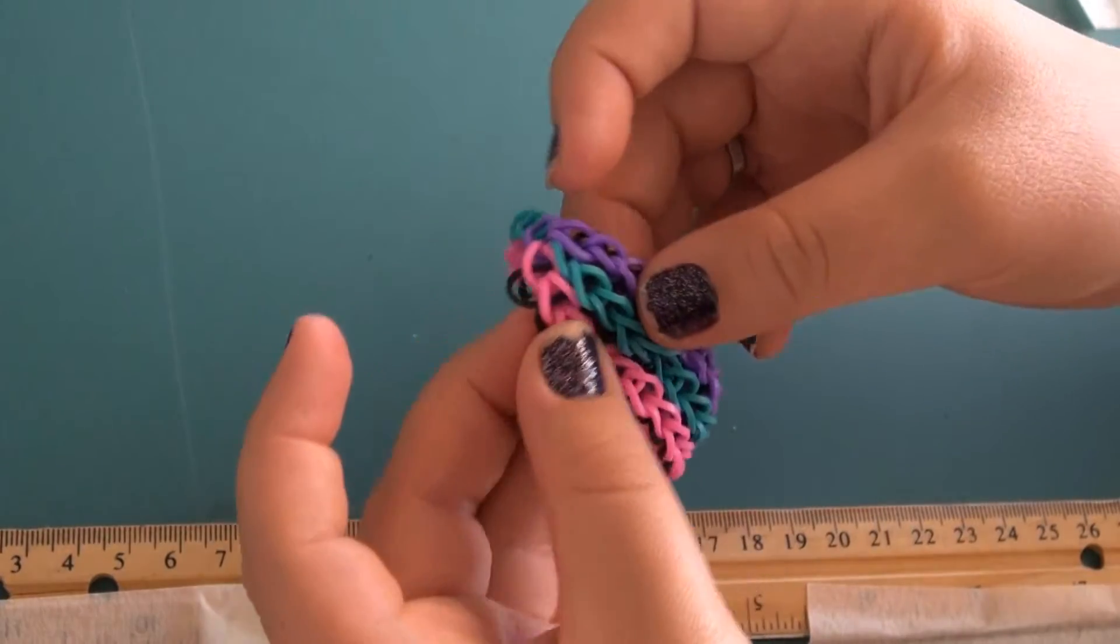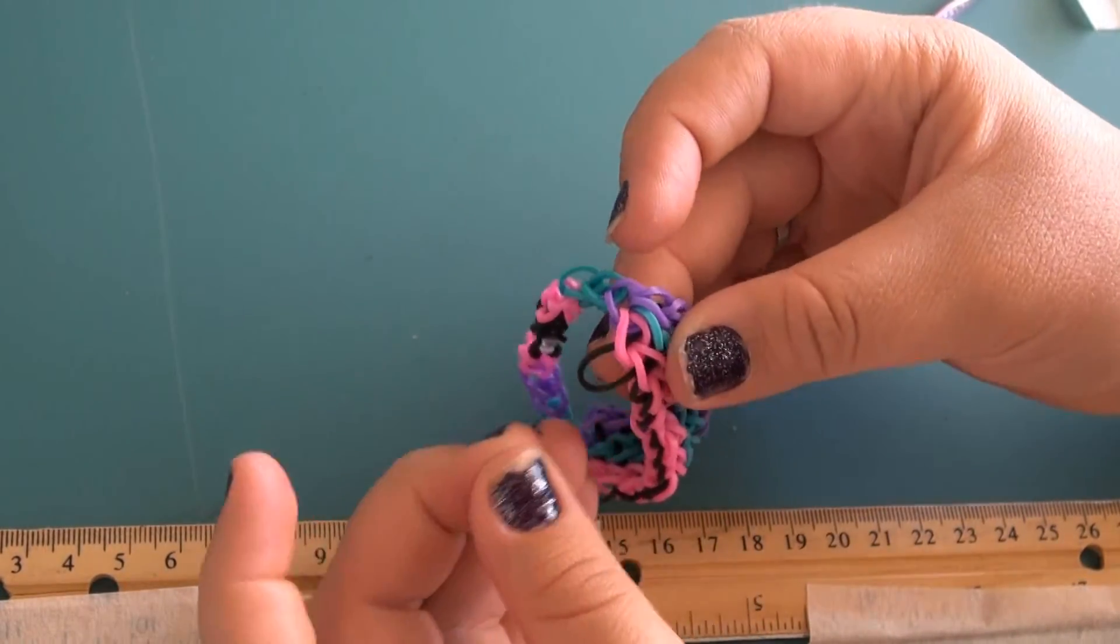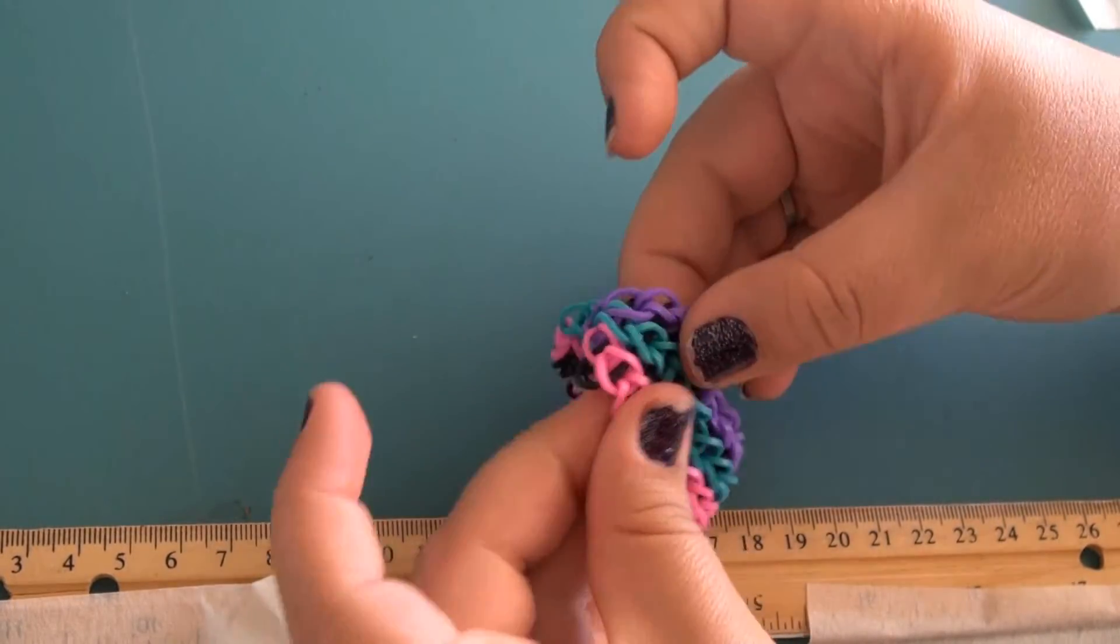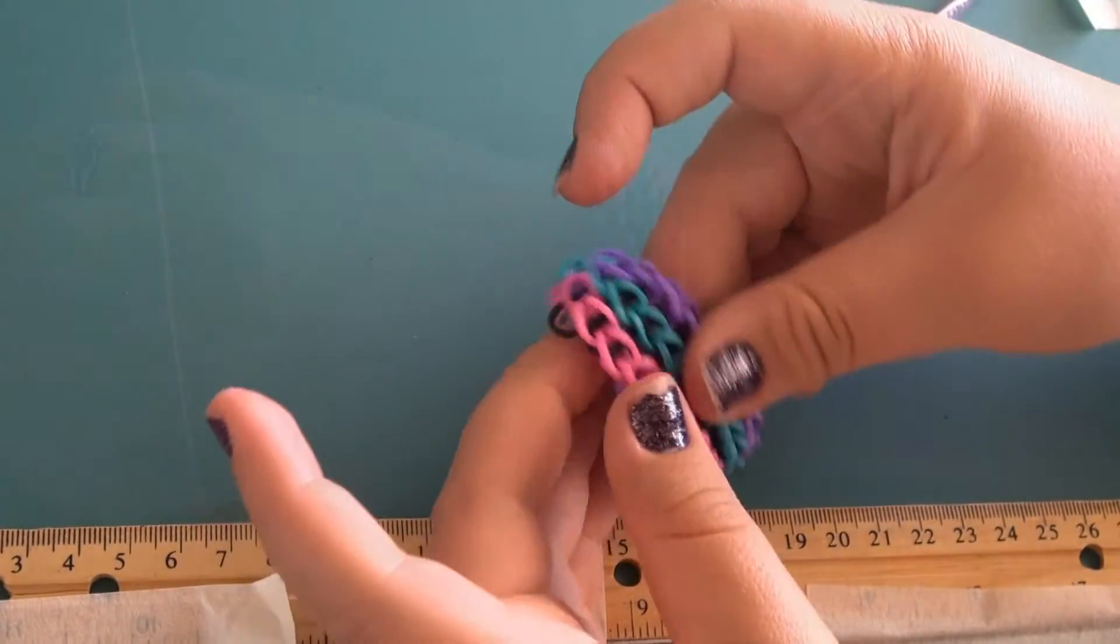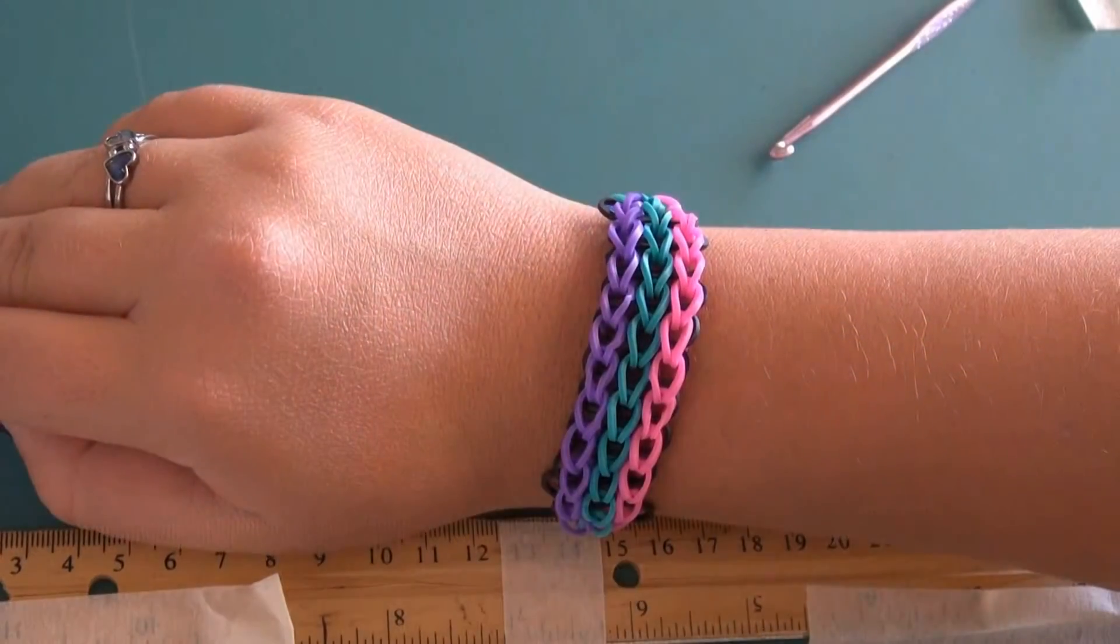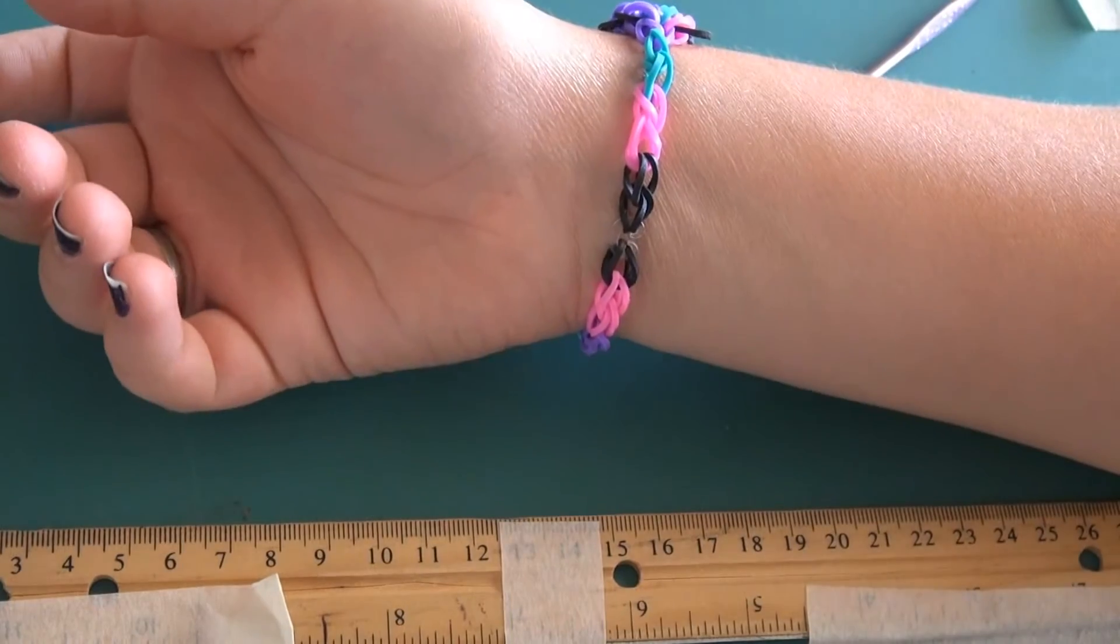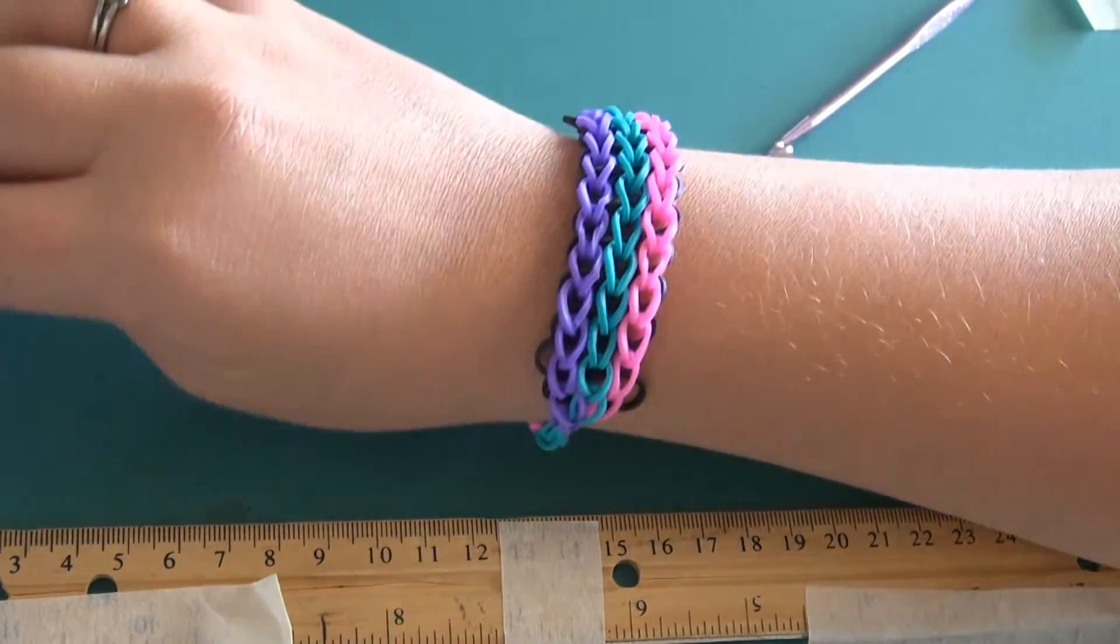And you may notice when you take it off the loom, these black bands stick out a little bit. To solve that, you just kind of stretch it that way and then it looks normal. And here it is on my wrist. Also, the extension seven may not be enough or may be too big. You can adjust it to your wrist size.